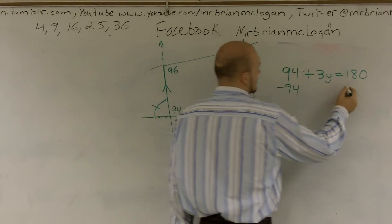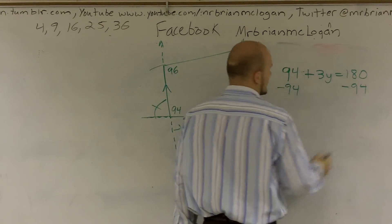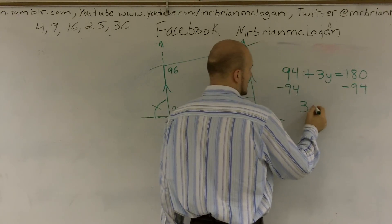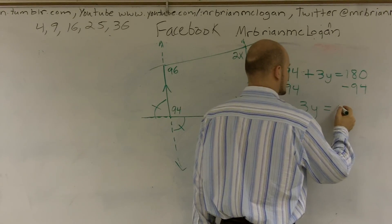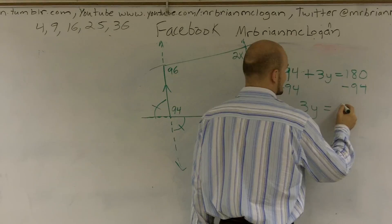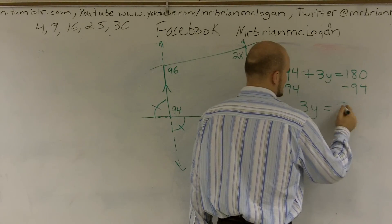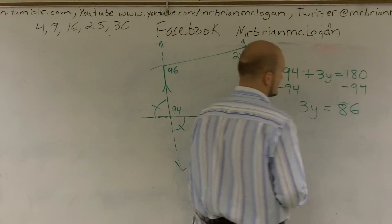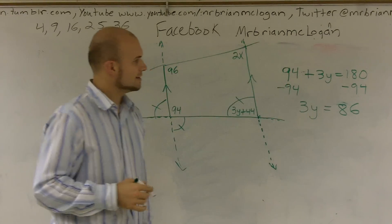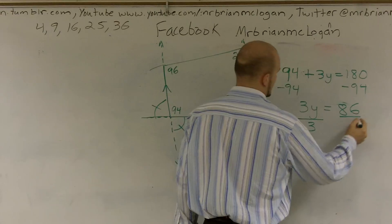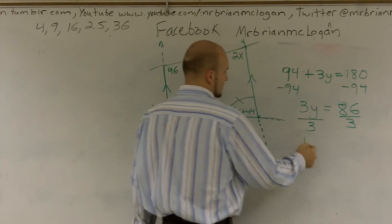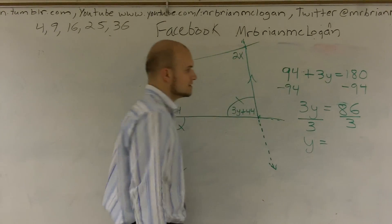And then I'm going to divide by 3. Y is equal to... let's see, 3 goes into 60 20 times with a remainder of 6. Wait, did I get all that right? 94 plus 86 is 170, not 180. Oh, that's 3y plus 44 I didn't write down. My bad.